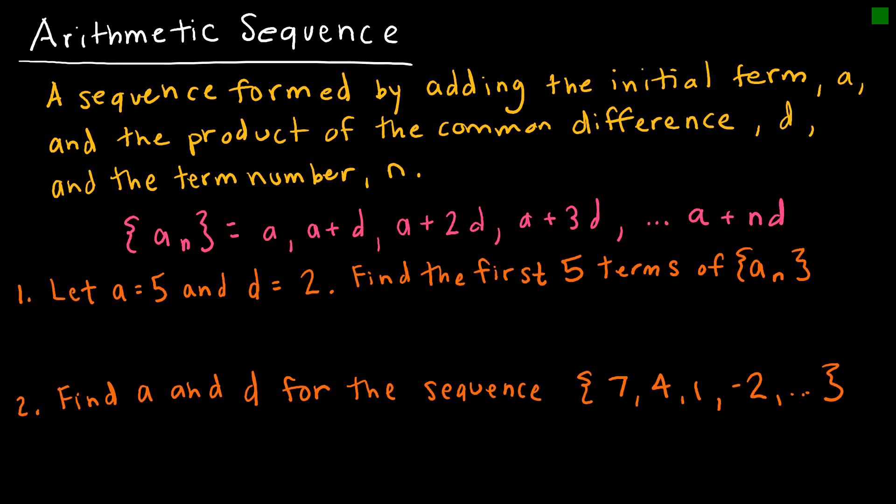There are two types of sequences that we will focus on: the arithmetic sequence and geometric sequence. An arithmetic sequence essentially just tells us that we're adding some term called the common difference d to our initial term of a to find the next term. So this is a, this is a plus d, this is a plus 2d, this is a plus 3d. I'm going to add another d and continue that process until whatever my final term is of the sequence.